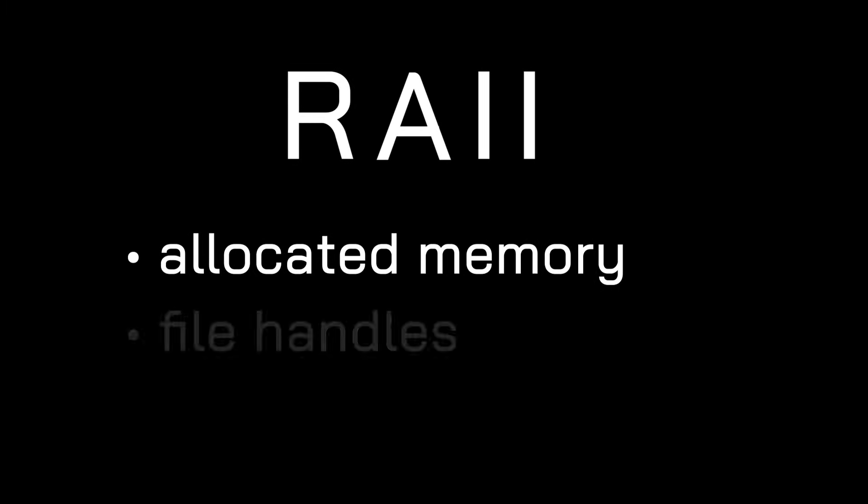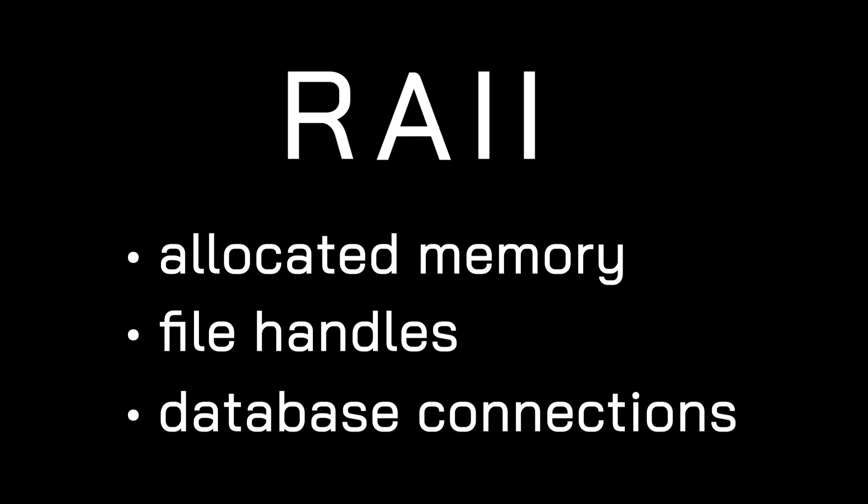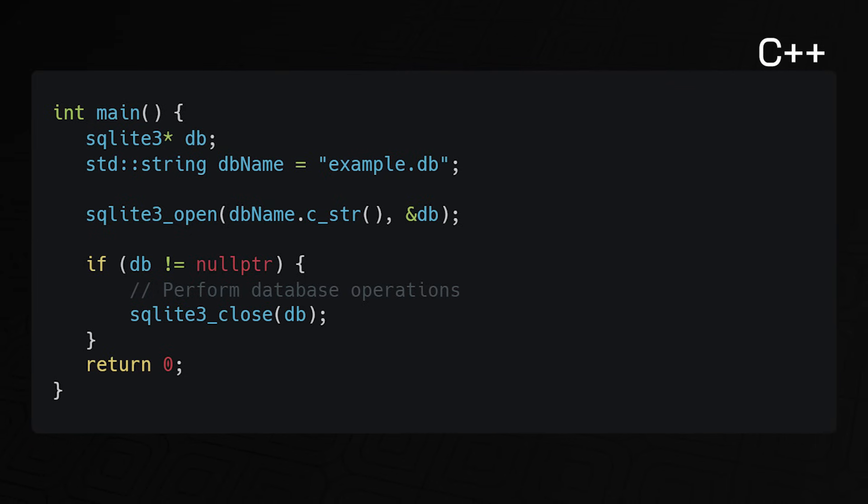Next, let's talk about one of Rust's most fundamental features: the ownership model. Ownership is based on the Resource Acquisition Is Initialization (RAII) design pattern from C++. The RAII pattern states that resources like allocated memory, file handles, and database connections should be tied to object lifetimes — when an object is created it acquires resources, and when it's destroyed those resources are released.